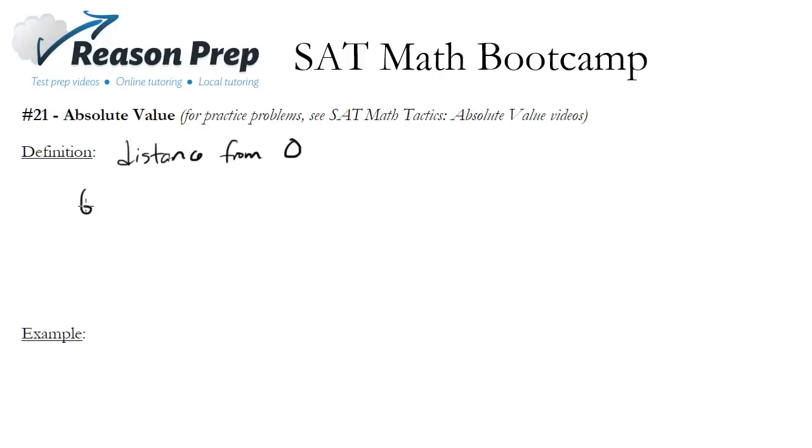So if we have 6 and we use these bars to represent absolute value, this is just equal to 6. That makes sense because if you think of a number line, here's 6, what is its distance from zero? Well it's 6, 6 units.